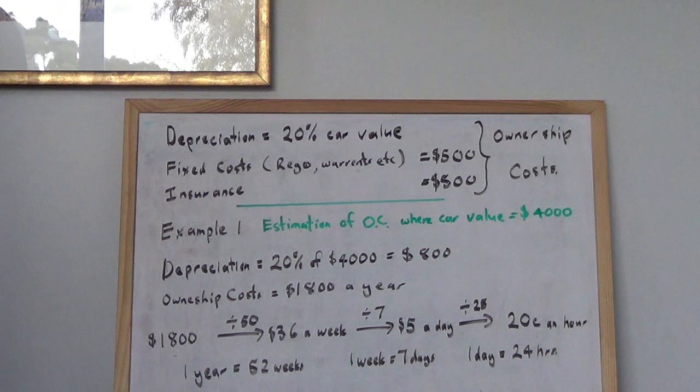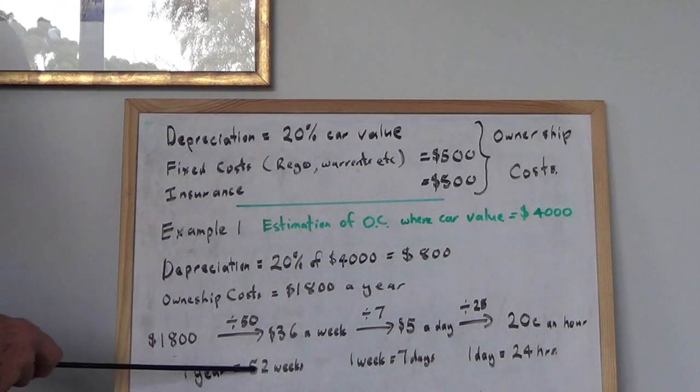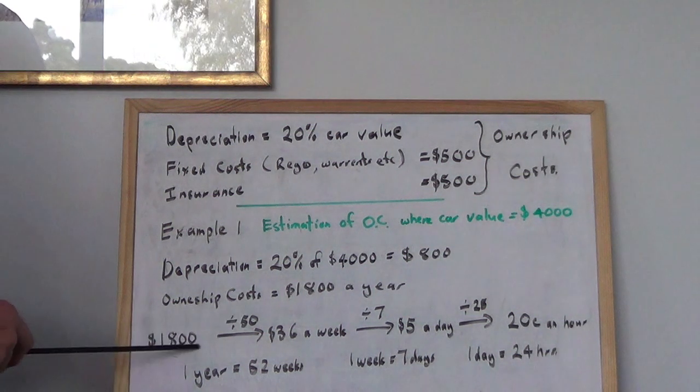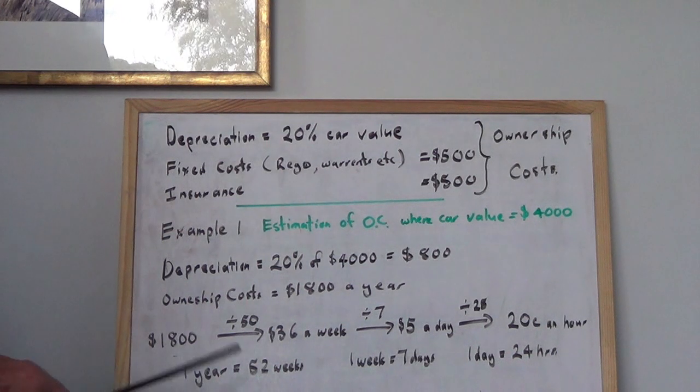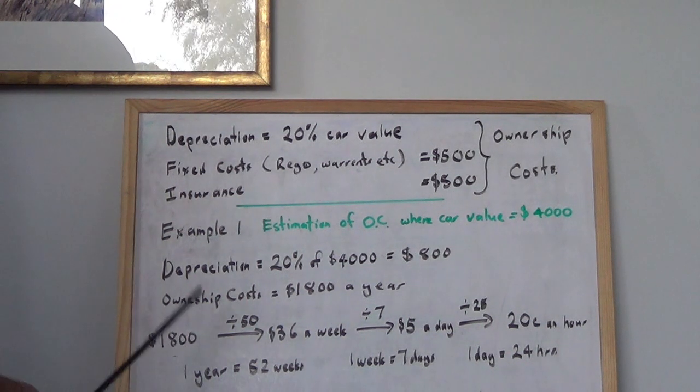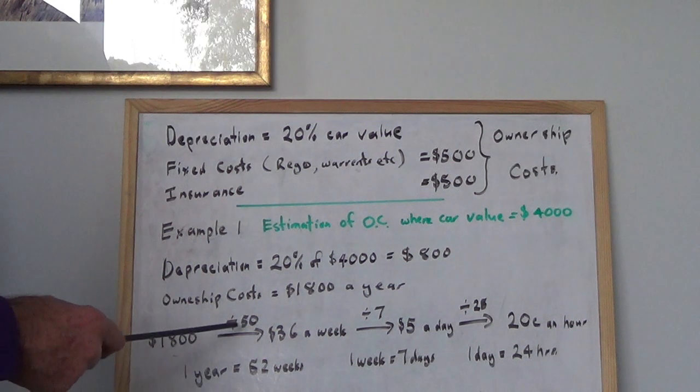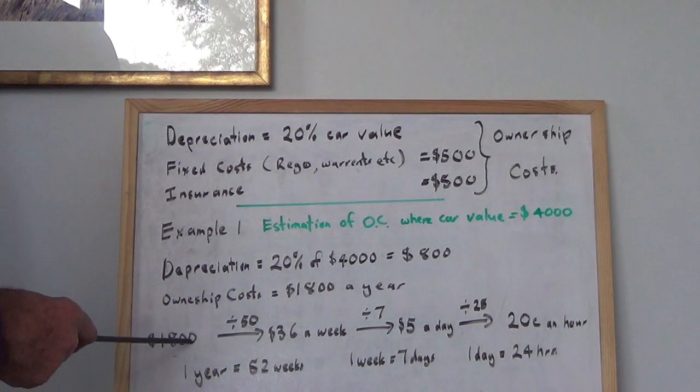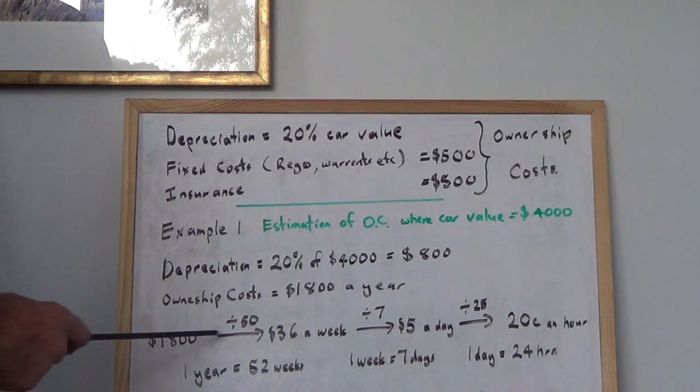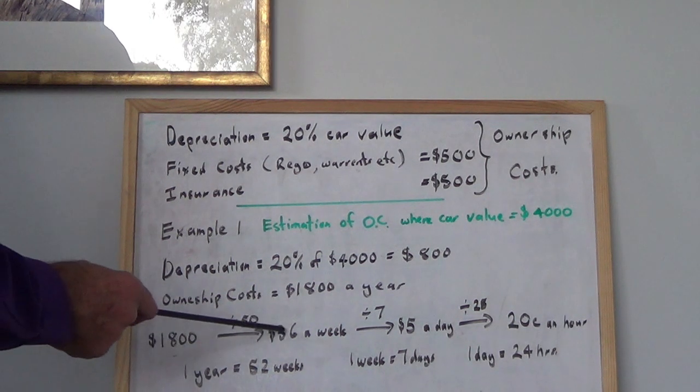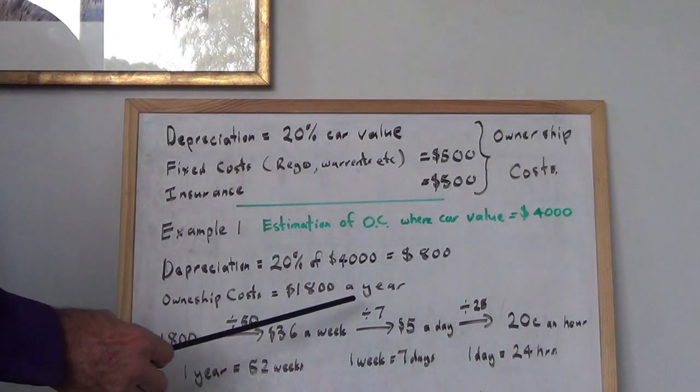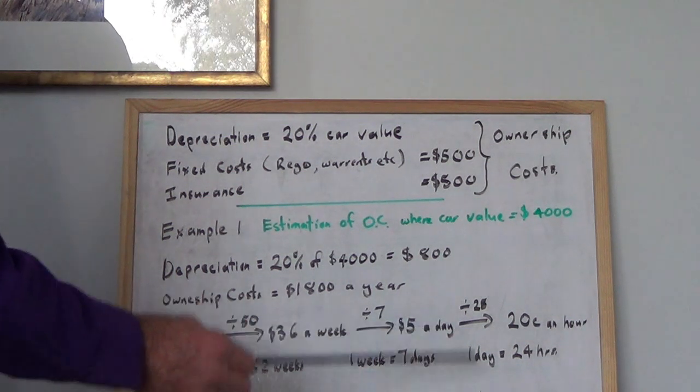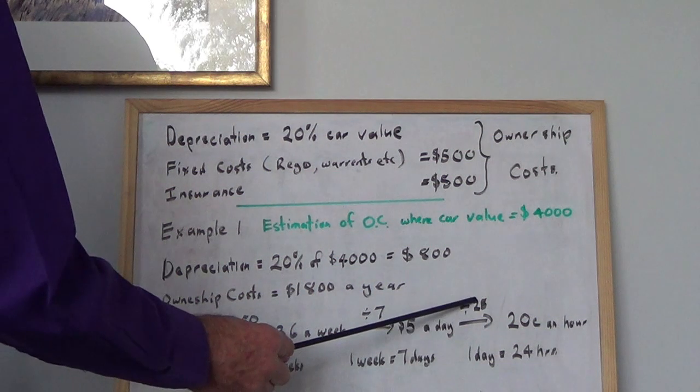Now one year is 52 weeks. We're just going to do an approximate calculation, so I divide that by 50, which is like dividing by 100 and multiplying by 2. So if you take off the zeros and multiply by 2 you get $36, or if you just do the straight division it'll come out to be $36. Now one week is 7 days, so you divide that by 7. Seven fives are 35, so I'll just make it $5.